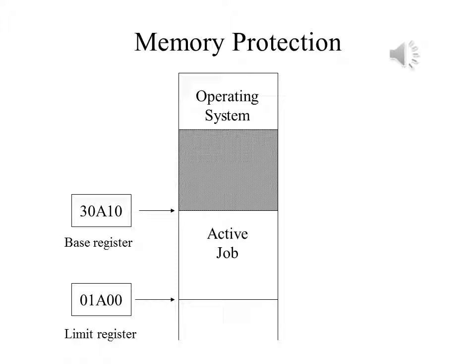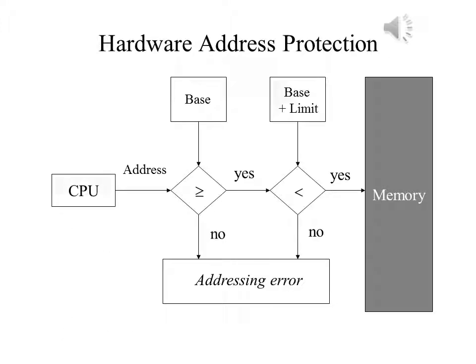If we extend this to multitasking systems, we would need a second register which would indicate how many bytes of memory were allotted to this program. This, in conjunction with the base register, would tell us the range of addresses available to the program. Every time an instruction makes an address reference, the address would be checked by the hardware's address protection. First, it would be checked to ensure that the address is greater than or equal to the base address. Then it would be checked against the sum of the base register and limit register to ensure that it is less than that value. Only after passing these two tests would it be able to access memory. If either of these tests fails, it would be a memory violation.